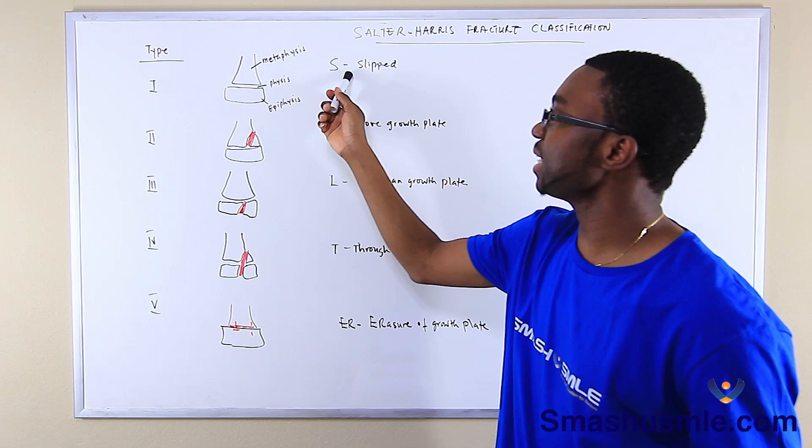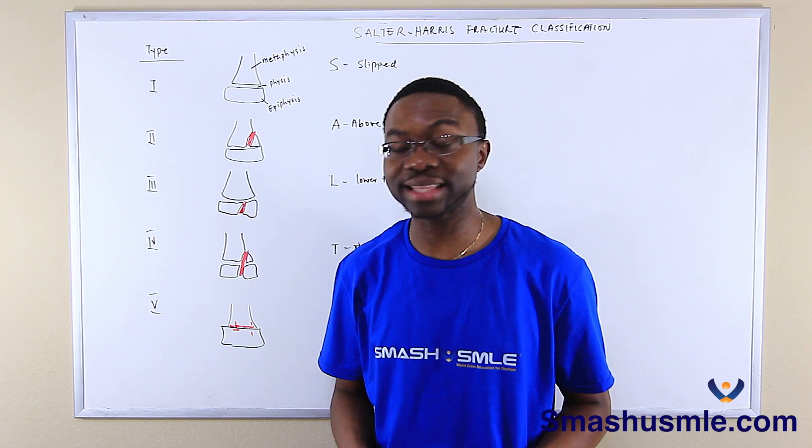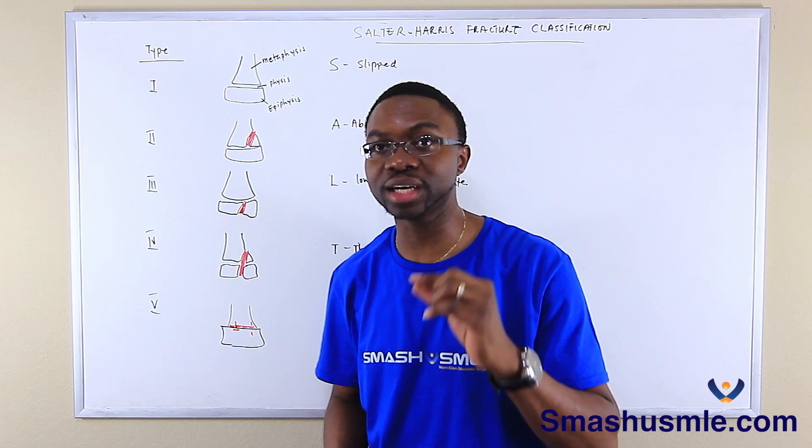Salter-Harris type one is basically a slipped fracture, where the bone basically slipped a little bit. It's a separation through the growth plate. It has excellent prognosis and can be managed non-operatively.